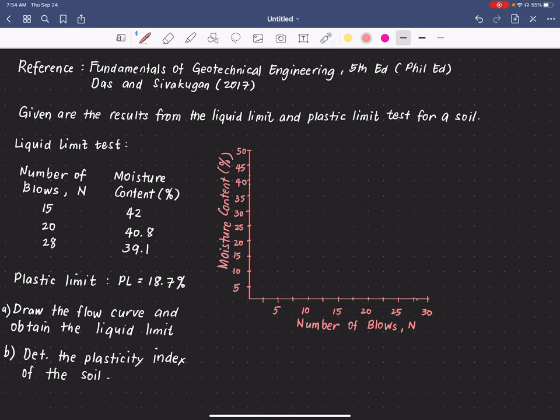Using the Casagrande cup, we have an N value equals 15 having a corresponding moisture content of 42. The next trial shows an N value of 20, or the number of blows, and the moisture content for that is 40.8.